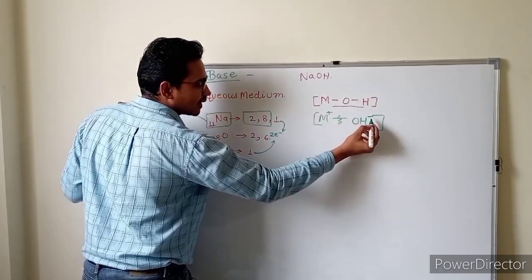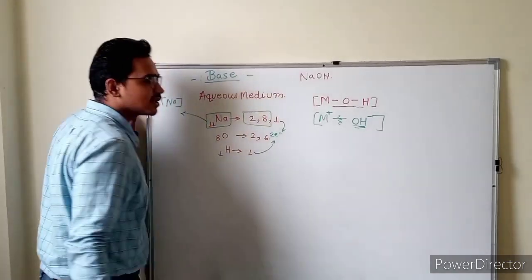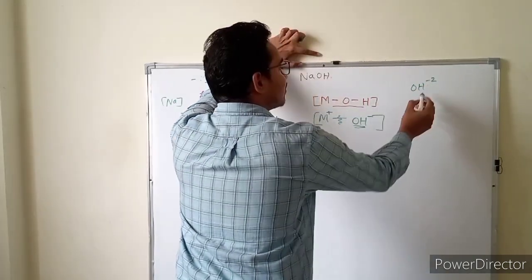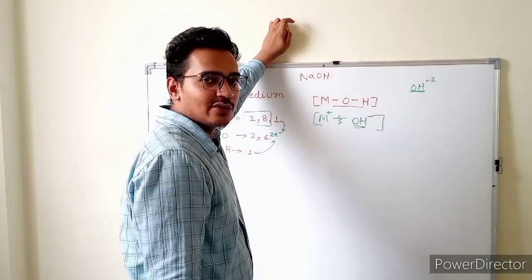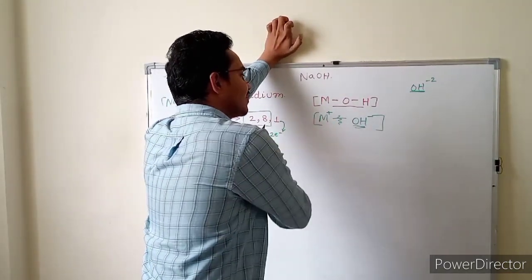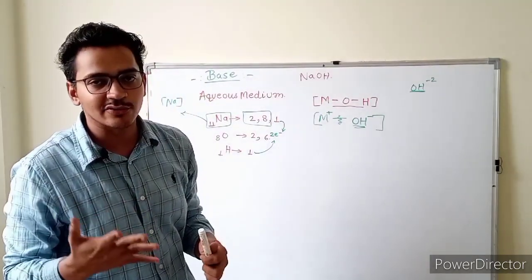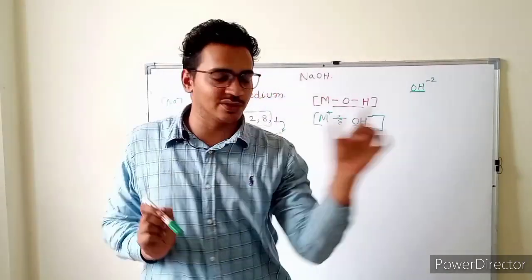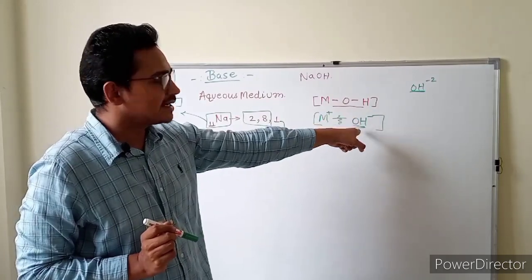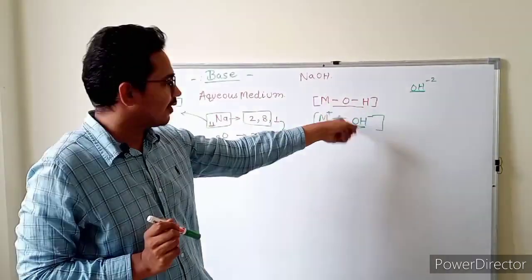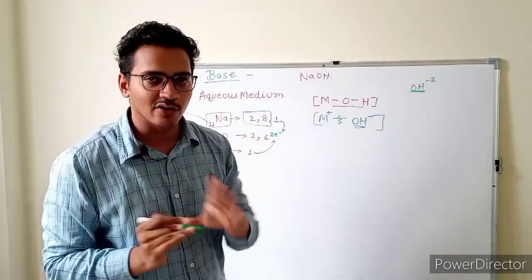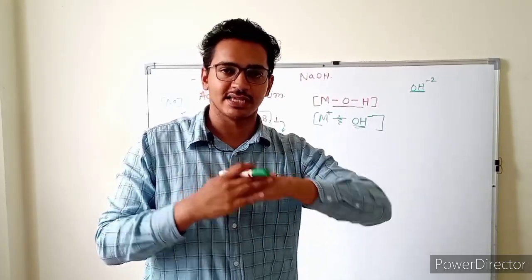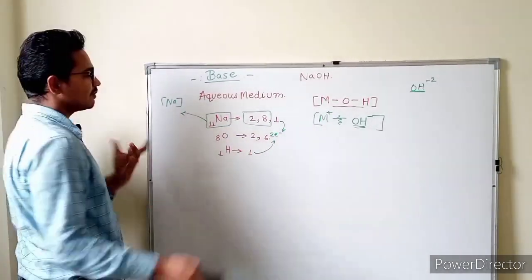The metal becomes positive and oxygen becomes negative. The bond between them means OH forms OH⁻. The metal becomes Na⁺ (positive) because it donated an electron. So in simple terms: metal positive separates and OH⁻ separates. That's the simplified explanation — the full story is quite complex and is better understood in class 11, but we don't need to go that far for your current target.